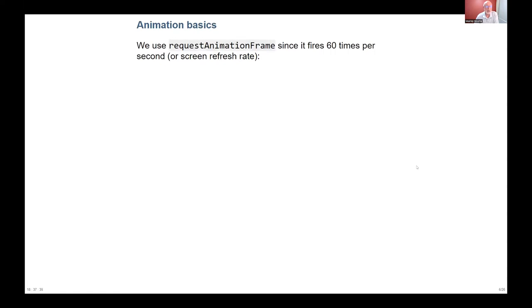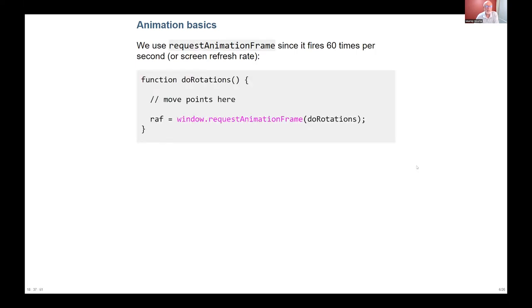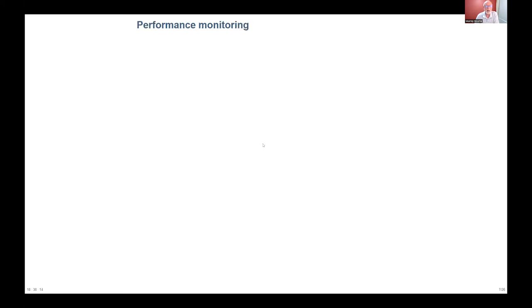For animation I'm making use of requestAnimationFrame, which fires at 60 times per second — the screen refresh rate, though it may be faster on a higher-spec monitor. The process looks like this: we set up a requestAnimationFrame and all it does is call the function in which it sits, so it calls the function every 1/60th of a second, and I'm making a lot of use of that for my animations.